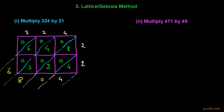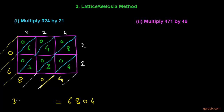The next diagonal has just 6, so we write 6 here. The last diagonal has 0. So the final number is 6804. The multiplication of 324 by 21 is 6804. This method is called the lattice method, gelosia method, or diagonal method.